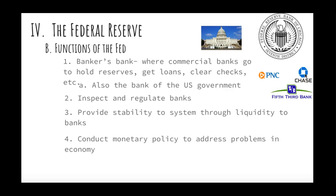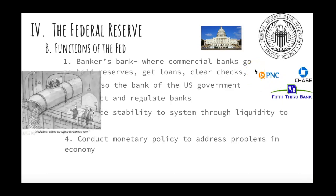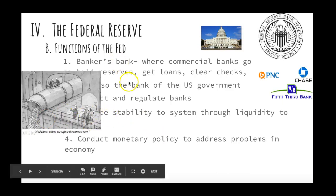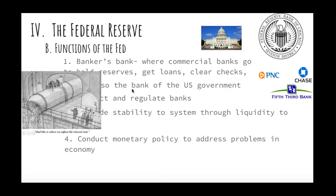Monetary policy is used to address problems in the economy — specifically unemployment and inflation. If you remember from our last unit on aggregate demand, monetary policy influences aggregate demand through the money supply. Think of it like a giant hose pipe: the Fed controls the amount of money available. They can open the floodgates and let money flow freely, or close it up so less money comes out, which influences interest rates.